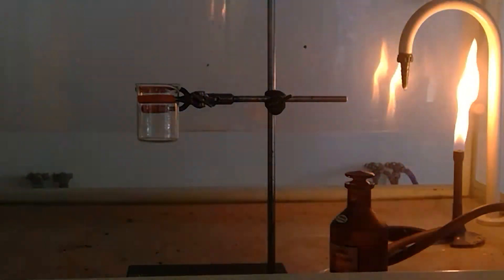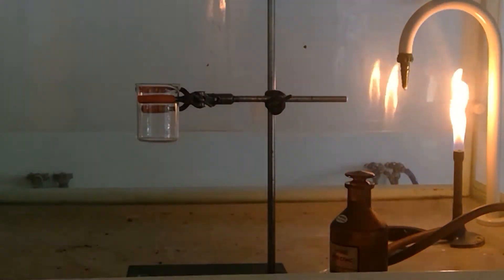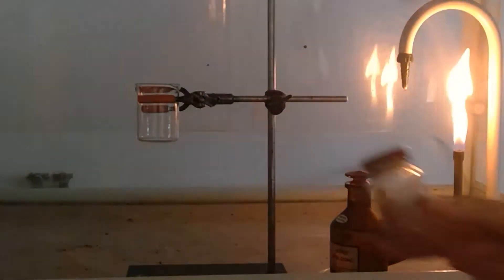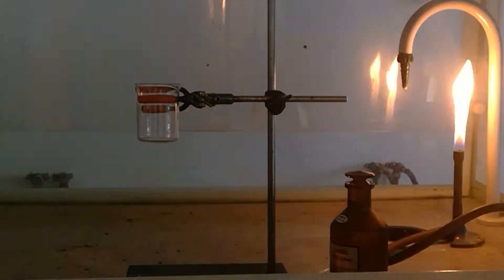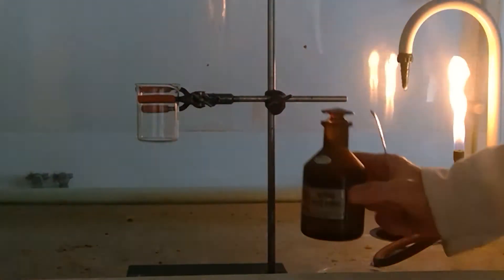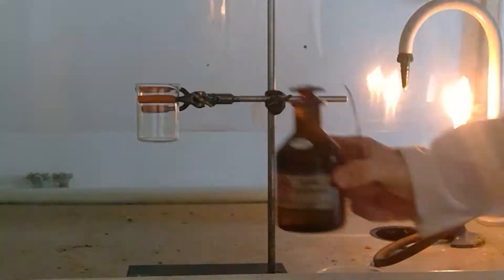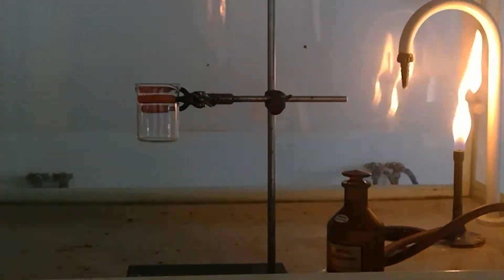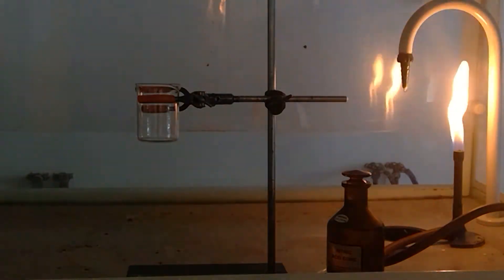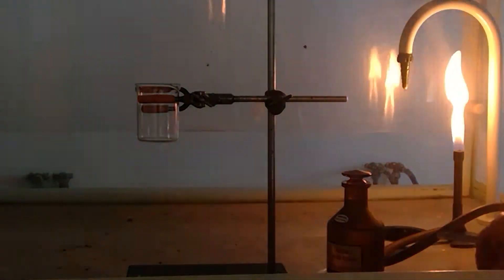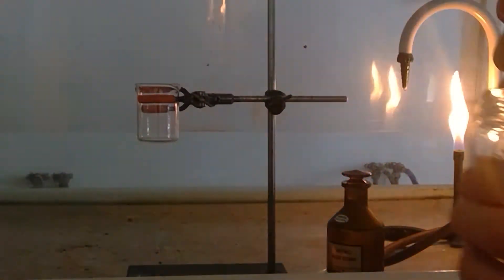This is the production of the pollutant gas nitrogen dioxide. We're going to use a mixture of copper solid with concentrated nitric acid. The reaction is instantaneous and a brown gas is produced which is the nitrogen dioxide.